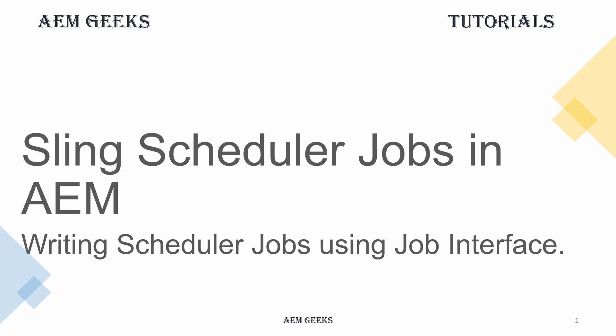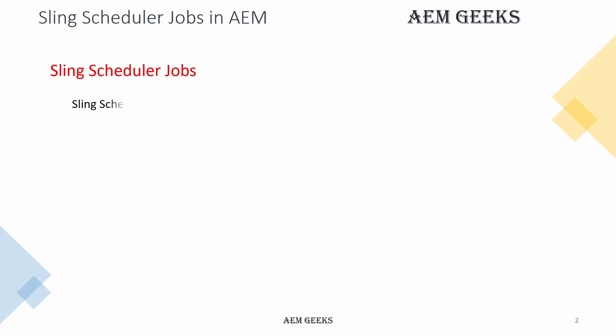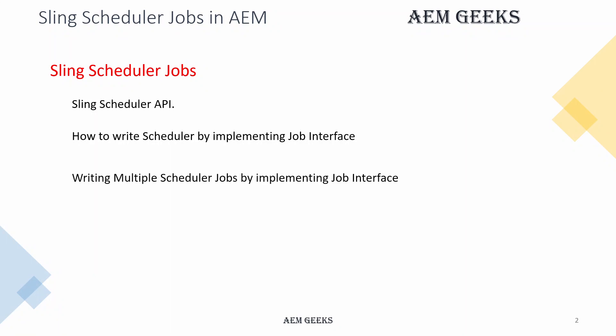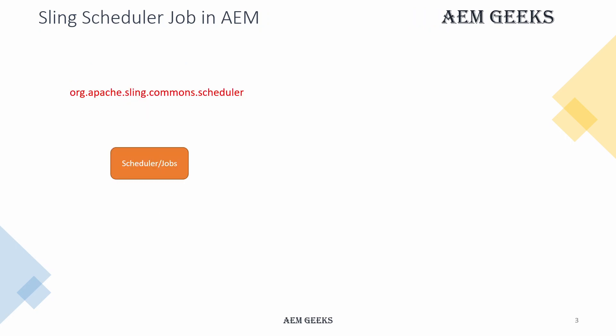In this tutorial I will talk about writing jobs in a scheduler using the scheduler APIs. I'll explain how you can write a scheduler using the Job interface, how you can write multiple jobs within the same scheduler, and we'll have a live coding demo. There is an org.apache.sling.commons.scheduler API used to write schedulers in AEM.